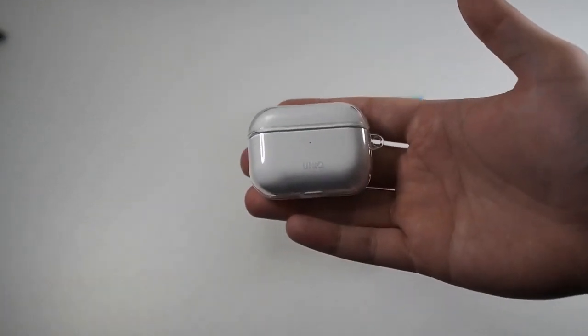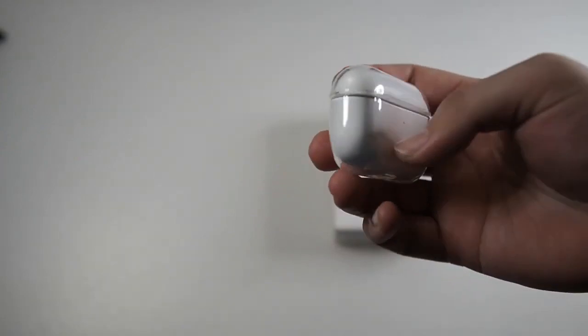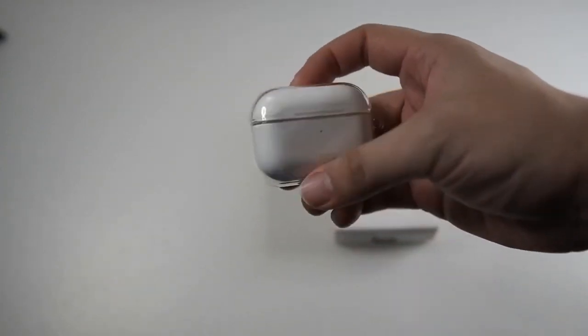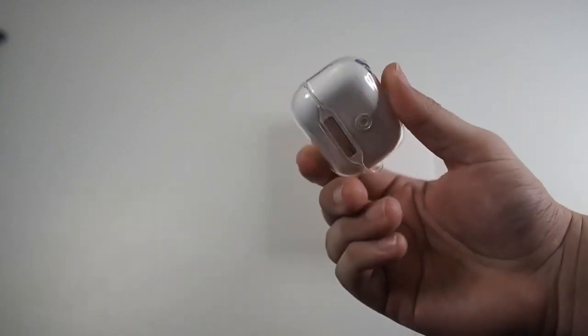Right now I'm actually using a case from Unique, this is a clear case. I'm still testing it out to see whether there are any yellowing issues, but for now no yellowing issues. Also using the same case with my iPhone 11 Pro Max.